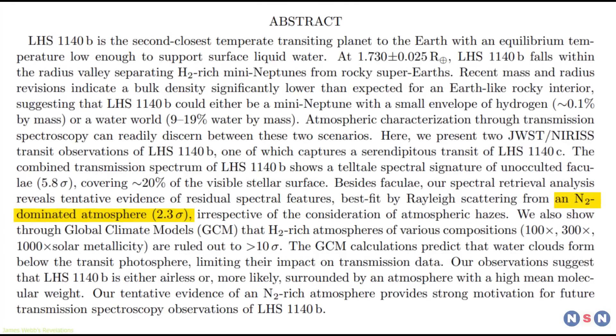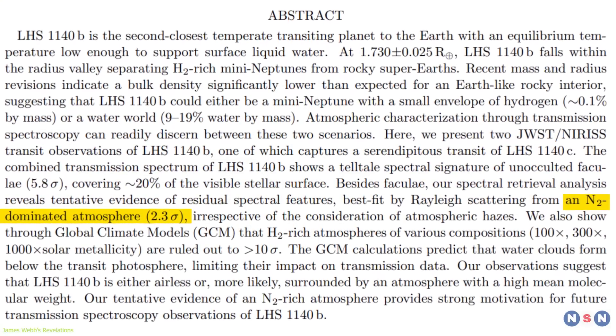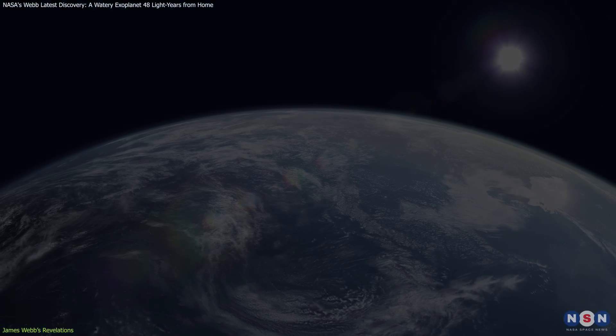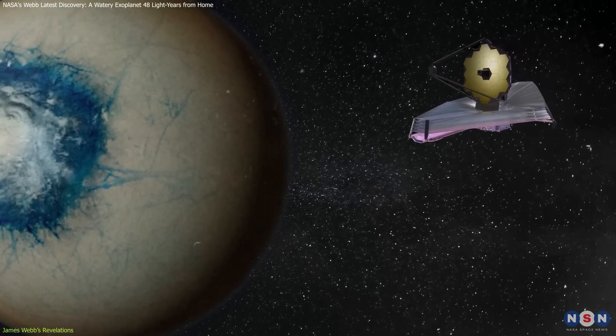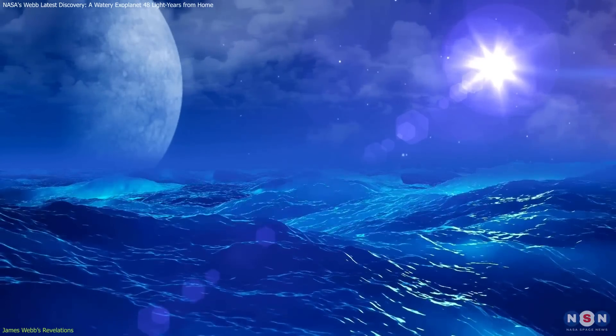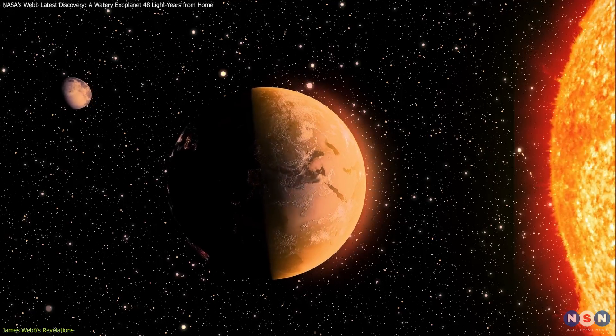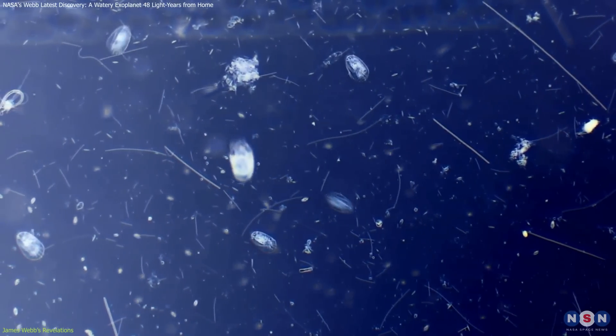Initial results from Webb suggest that this exoplanet might host a nitrogen-rich atmosphere, similar to Earth's. This is an eye-opening hint because a nitrogen-dominated atmosphere can stabilize a planet's climate and support the presence of liquid water at the surface. Such an atmosphere could buffer the temperature swings and radiation effects from the host star, making conditions potentially amenable to life.